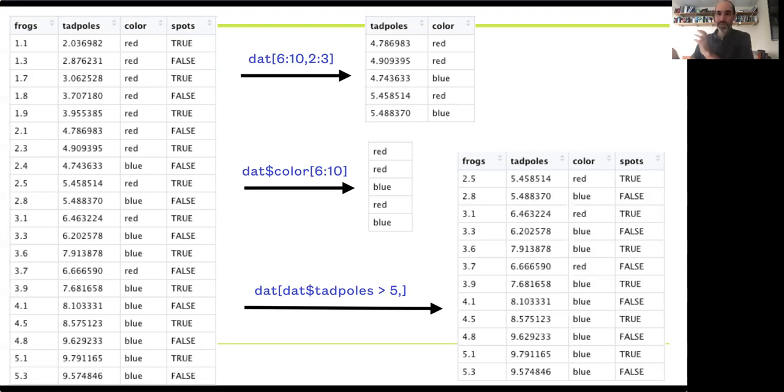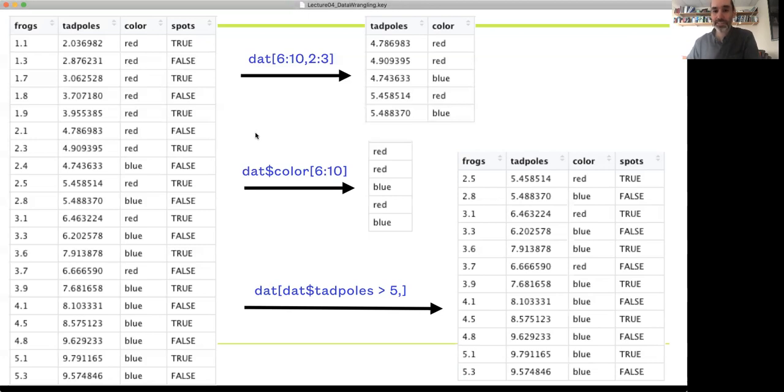And that actually can often be a more robust way of coding up things rather than referencing by column numbers, because columns can always shift in data structures if they get reorganized. But usually the headers stay the same.